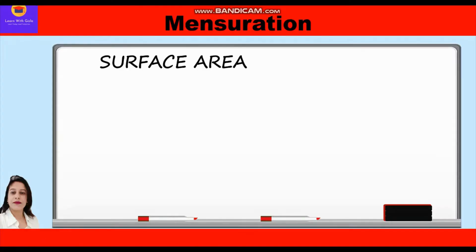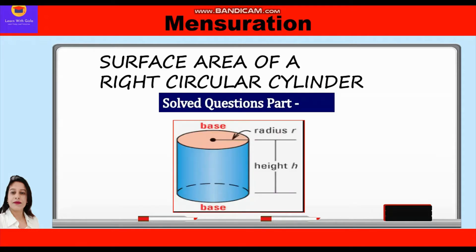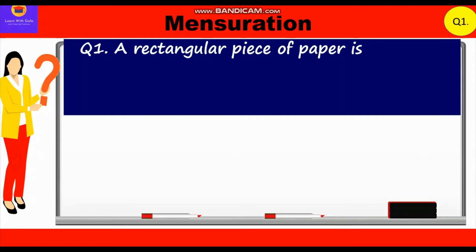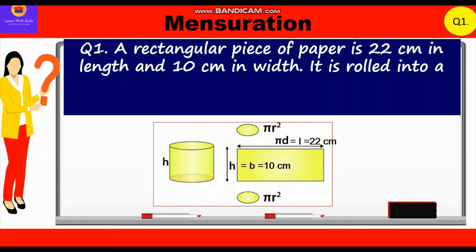Hello everyone. In this video on mensuration, we are going to take up some solved questions related to the surface area of a right circular cylinder. The first question is: a rectangular piece of paper is 22 centimeters in length and 10 centimeters in width; it is rolled into a cylinder along its length. Find the surface area of this cylinder.